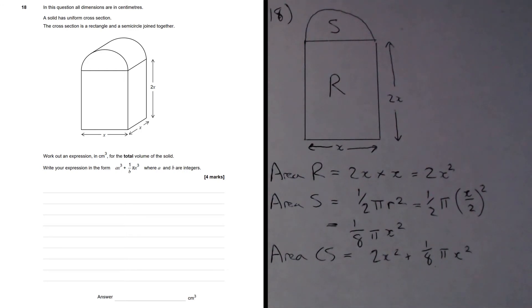this is a prism, and the length of the prism, or its thickness, is x. So the area of the solid is going to be that expression all multiplied by x. In other words, 2x cubed plus 1 over 8 pi x cubed.